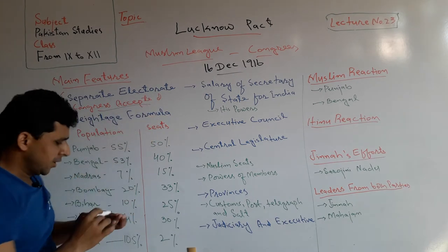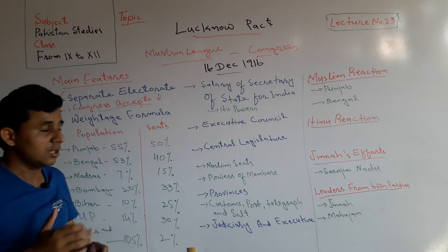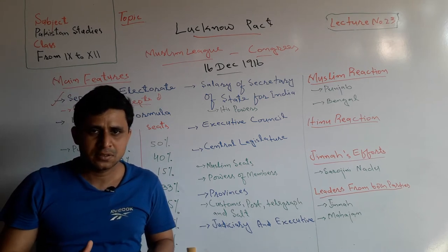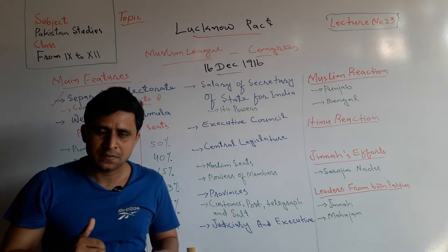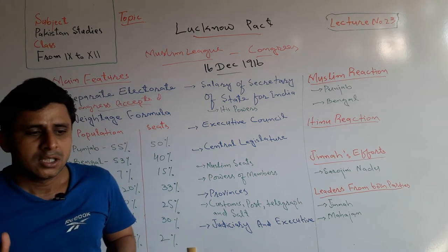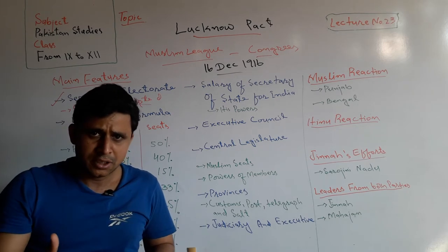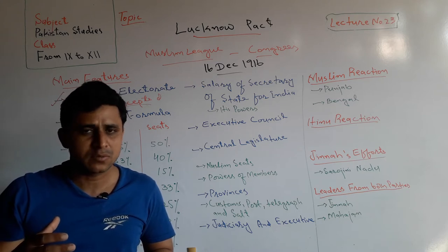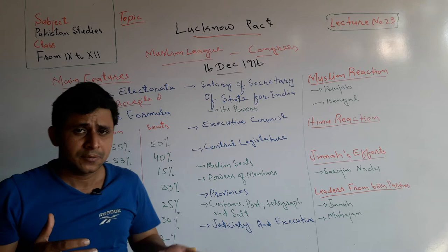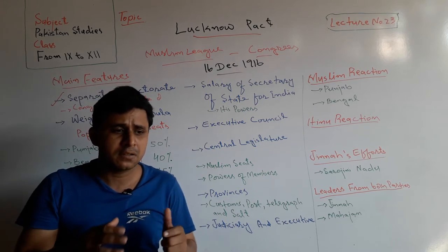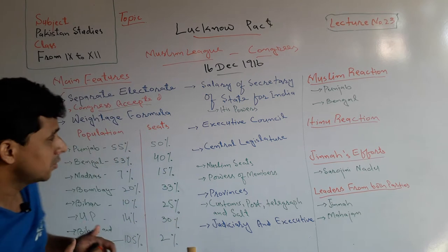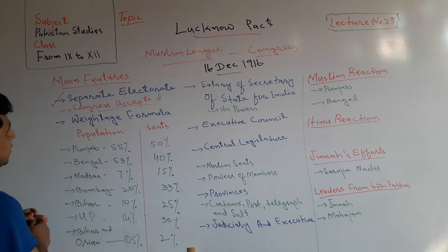According to the separate electorate, Muslims could elect their own representatives, and those representatives were only Muslims. When the separate electorate was given to Muslims in the Minto-Morley Reforms, Congress had not accepted it. But in this agreement, Congress accepted separate electorate for Muslims for the first time in the history of the freedom movement. This is the first main feature of the Lucknow Pact.